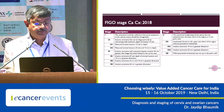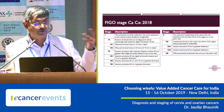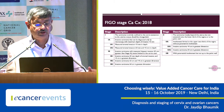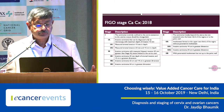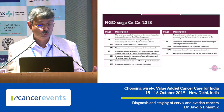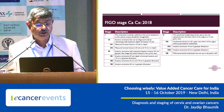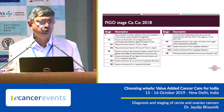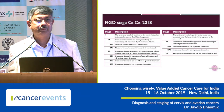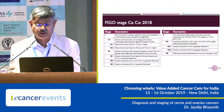Stage 1B is macroscopic disease, again subclassified into 1B1, 1B2, and 1B3 — this is different from the previous classification. 1B1 is a tumor size greater than 1A2 but less than 2 cm in the greatest dimension. 1B2 is between 2 to 4 cm. 1B3 is more than 4 cm in the greatest dimension.